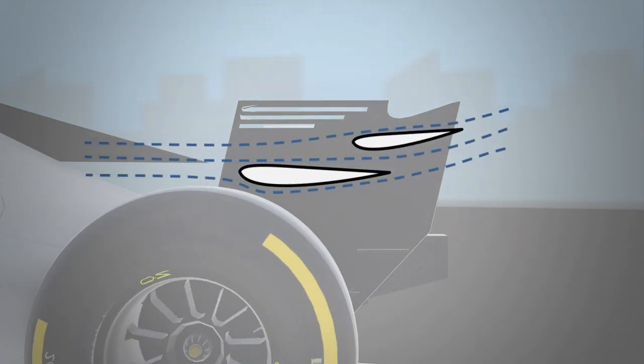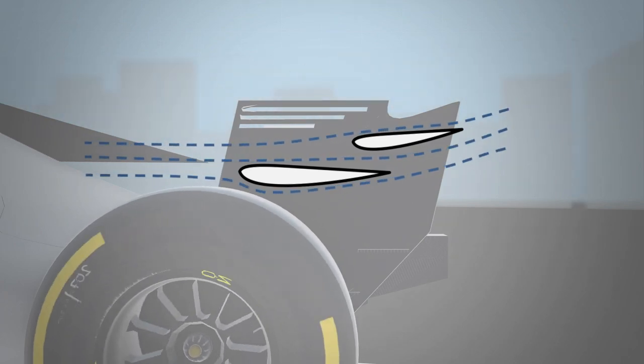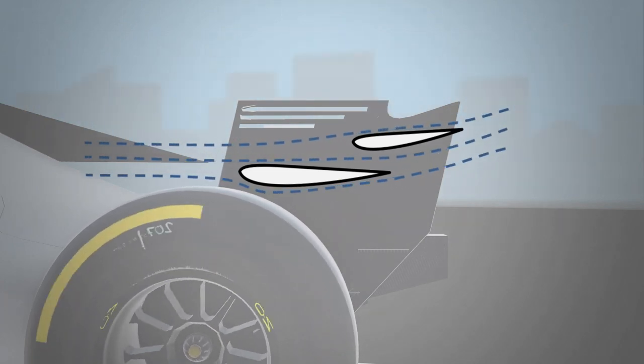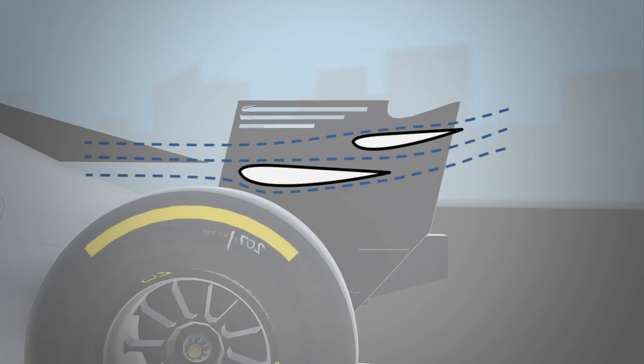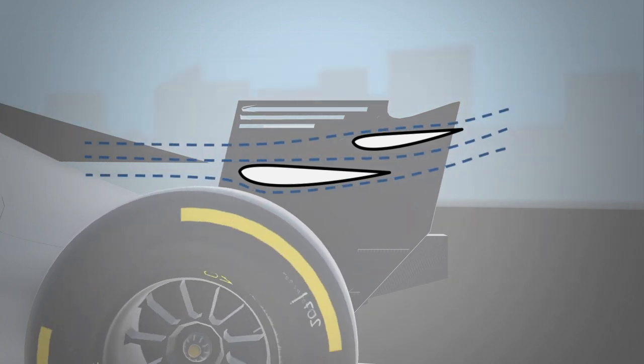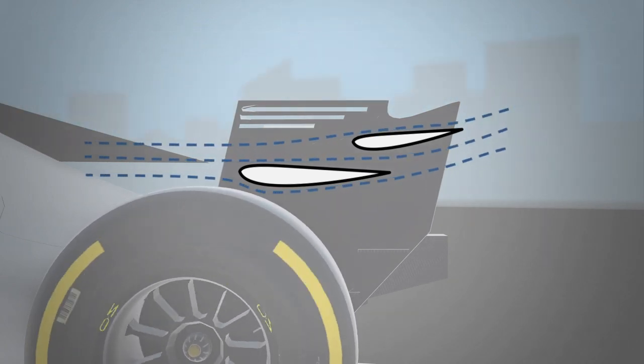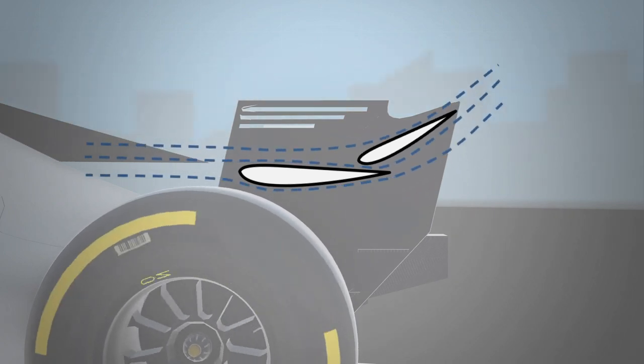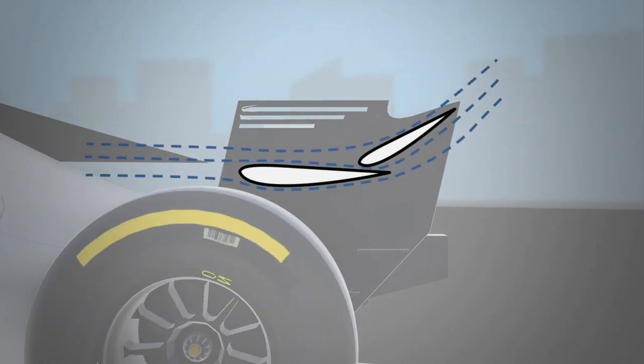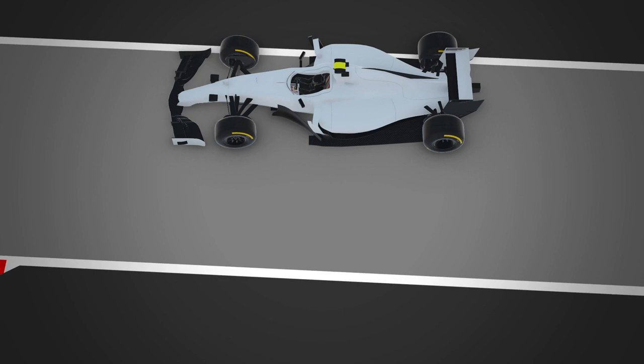The flap angle is reduced during long straights to minimise drag and allow the car to achieve its maximum top speed. This is similar to the retraction of flaps on an aircraft during cruise. The DRS is then deactivated before entering a corner to offer maximum downforce allowing the car to turn faster.